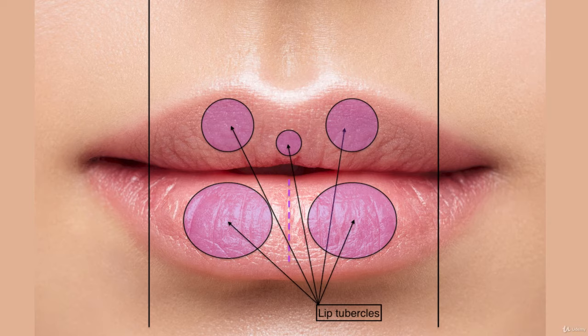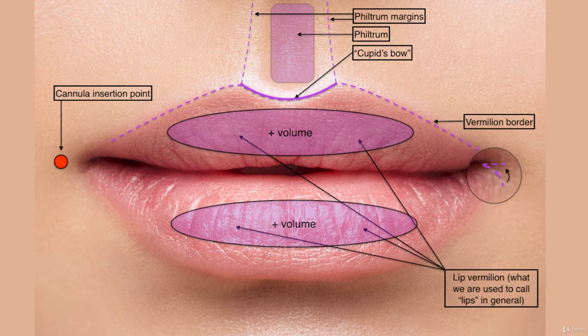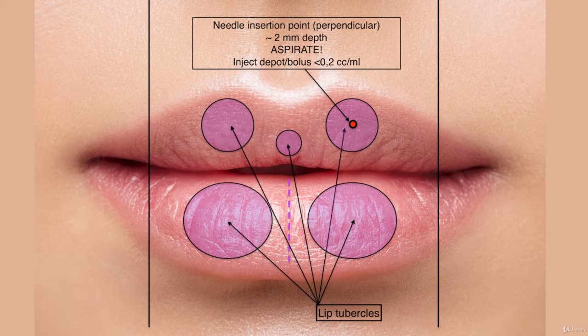The upper lip also has tubercles; they are much harder to notice. But if you want to shape the lip better, you should enhance the vermilion border — including the philtrum — raise the corners, volumize the lips using a cannula, use a needle for the border and corners, a cannula for volume, and a needle if you want to enhance tubercles. The needle should be inserted a couple of millimeters in depth. Aspirate, then inject 0.1 to a maximum of 0.2 ml of filler to avoid nodules.